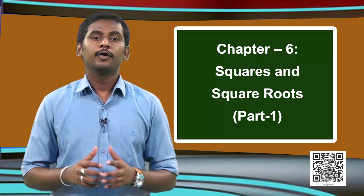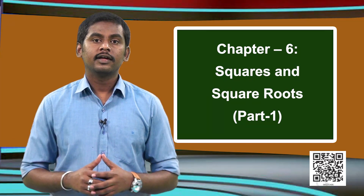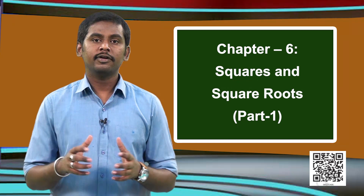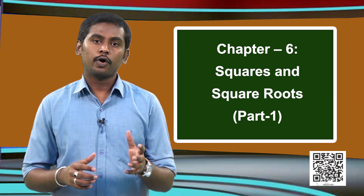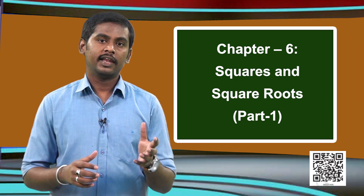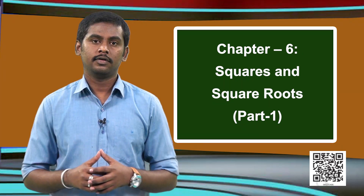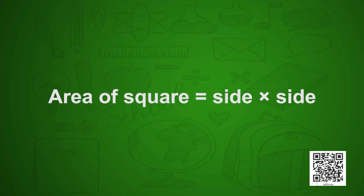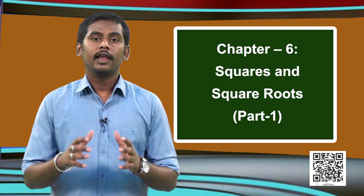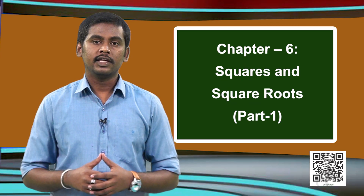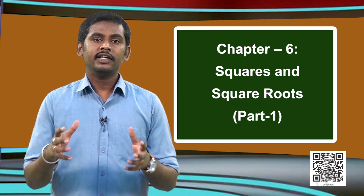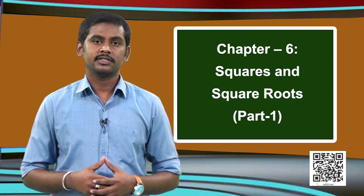We know that the area of a square is given by the product of its length of a side with itself. That is, the area of a square is nothing but side multiplied with side, which is side squared. Let us try to see the various areas with the given sides.